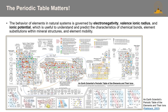A periodic table matters. Besides telling us that copper, gold, and zinc are elements, the behavior of elements in natural systems is governed by electronegativity, valence ionic radii, and ionic potential, which is useful to understand and predict the characteristics of chemical bonds, element substitutions within mineral structures, and element mobility.